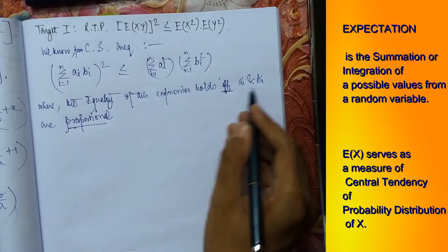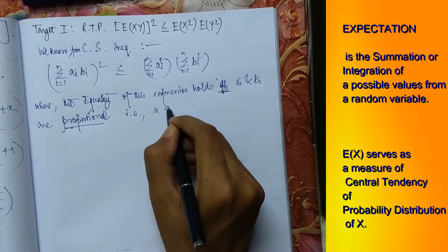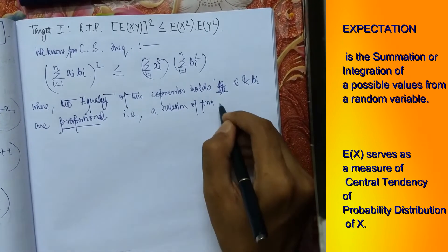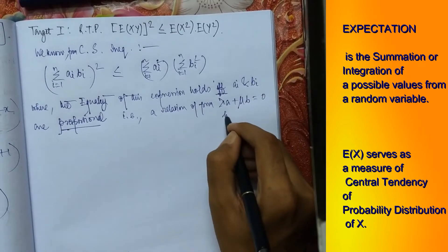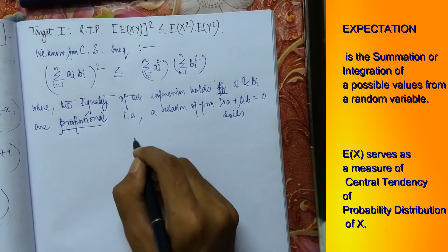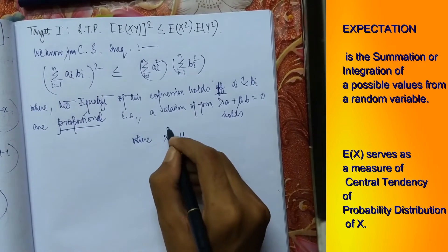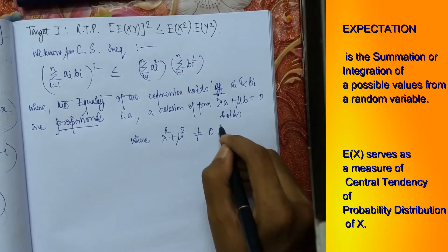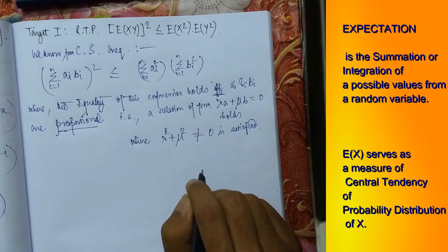the equality holds if ai and bi are proportional, that is a relation of form lambda a plus mu b equals to 0 holds where lambda square plus mu square is not equals to 0 is satisfied. Done.